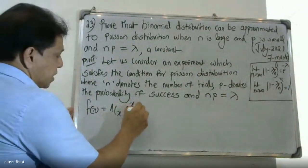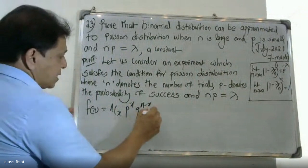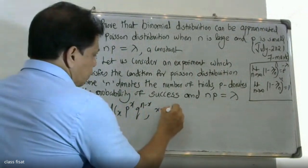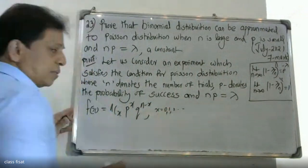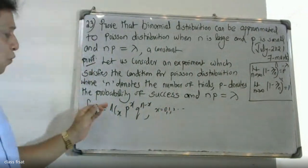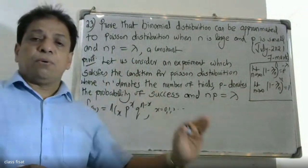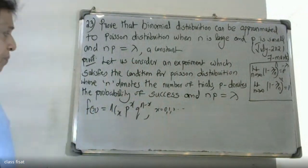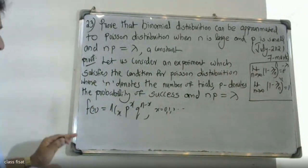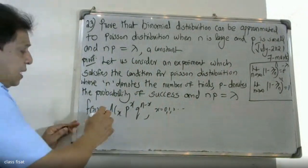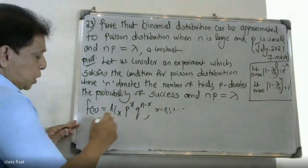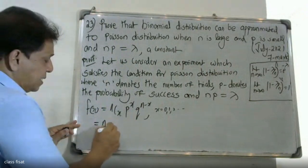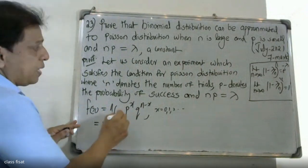The binomial formula is nCx p raise to x q raise to n minus x, where x is equal to zero, one, two, and so on. Here nCx, p and q are the components we will now expand.